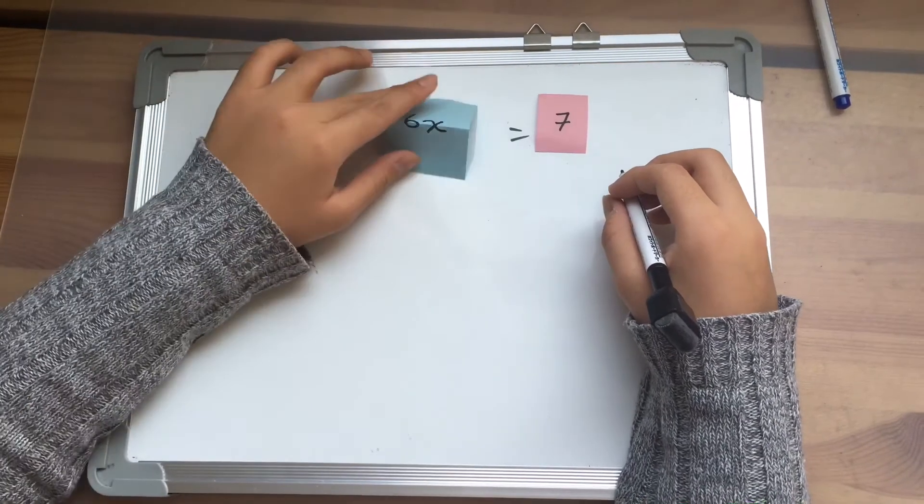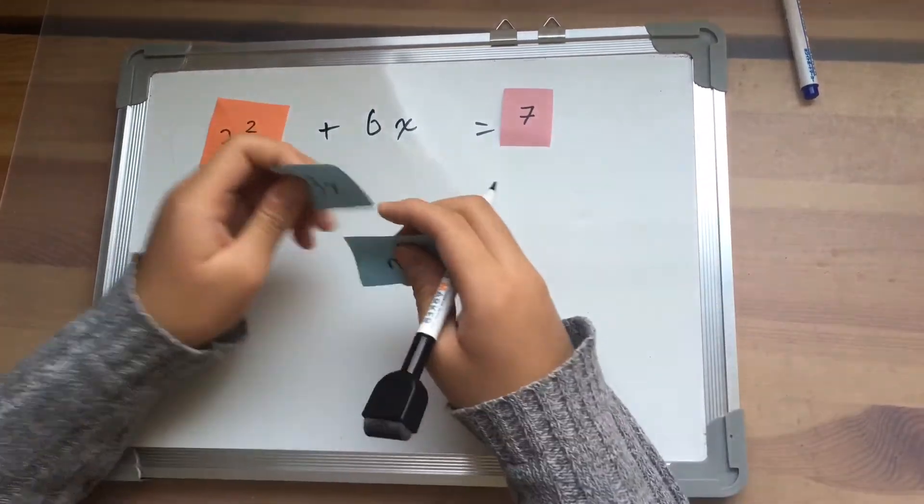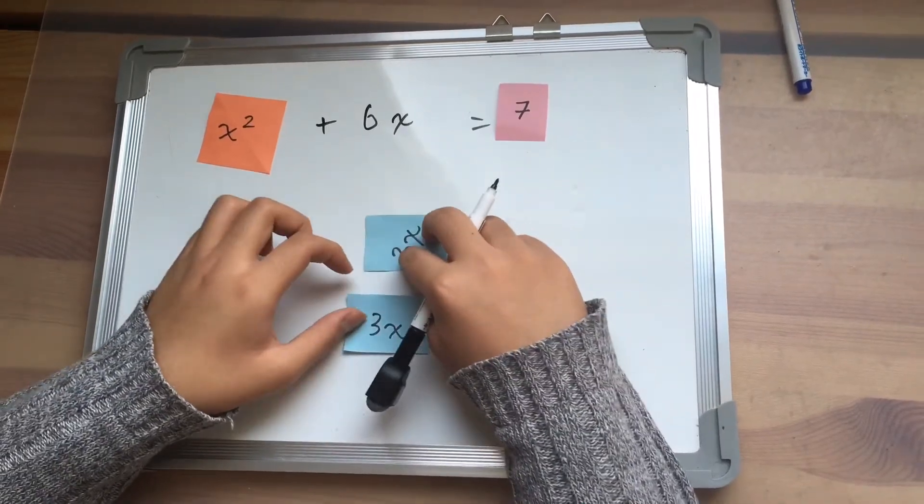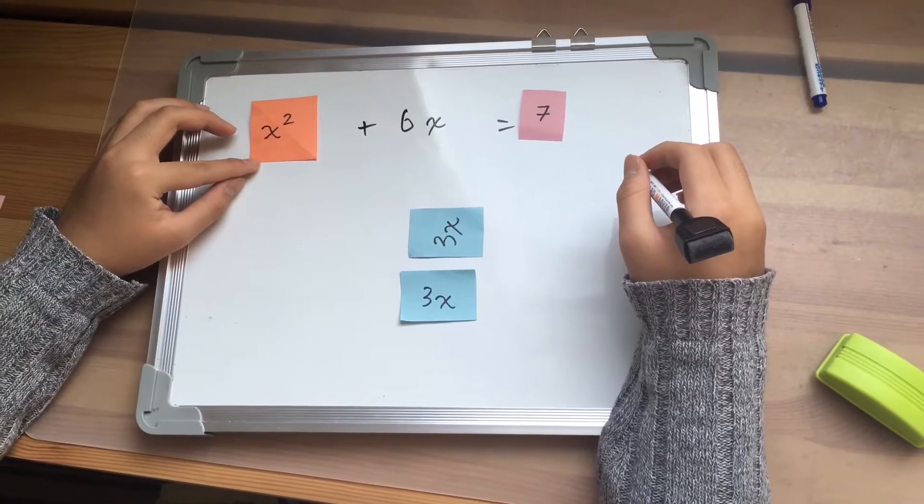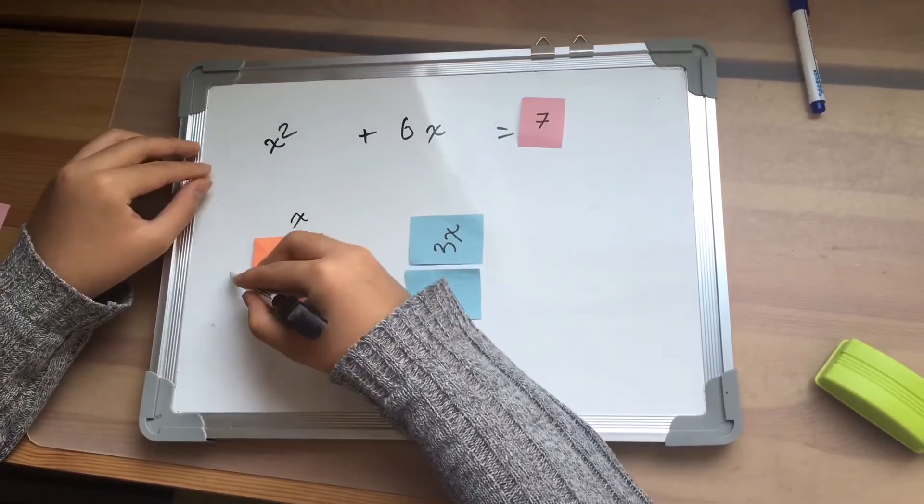First, I will have the 6x rectangle, so now I have two pieces of 3x rectangles. Each length of this square will be x and x.